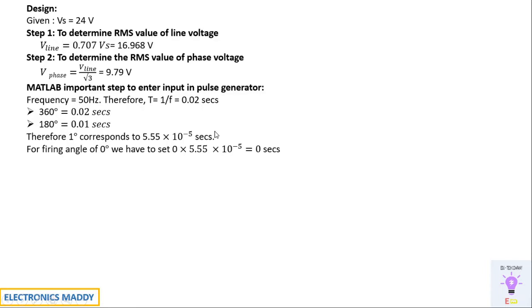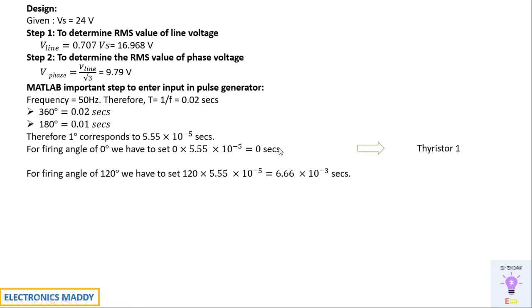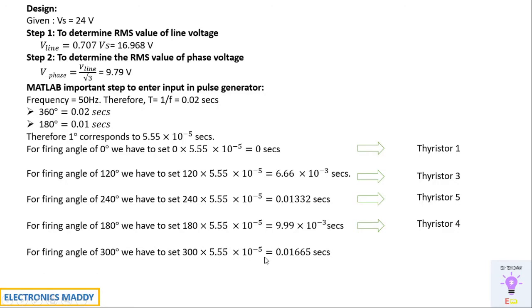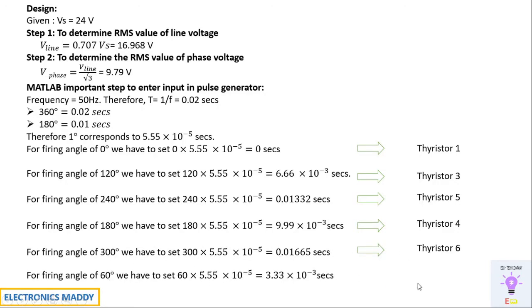We will be triggering in this particular fashion. For a firing angle of 0 degrees, thyristor 1 is triggered at 0 seconds. For a firing angle of 120 degrees, thyristor 3 is triggered at 6.66 × 10⁻³ seconds. Thyristor 5 is triggered at 240 degrees, thyristor 4 at 180 degrees, thyristor 6 at 300 degrees, and thyristor 2 at 60 degrees. We will be entering these as the time delay in the pulse generator block in MATLAB.